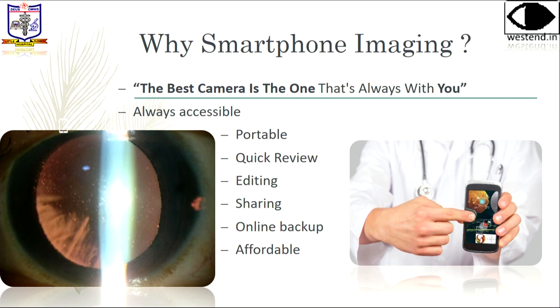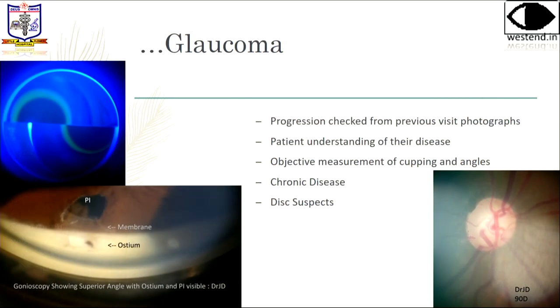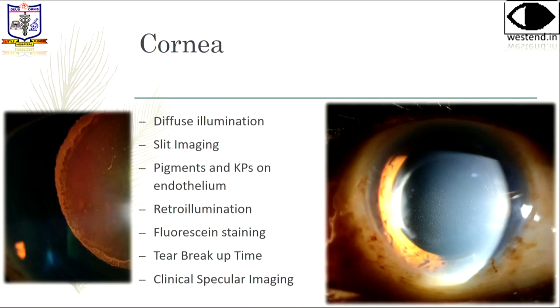You can do all these things on a smartphone which you cannot do on a slit lamp camera. Gonioscopy, optic disc photos — all important in glaucoma. You can check progression from previous photographs, especially in an institute where one doctor sees a patient one day and the next session somebody else sees the same patient. You need photographic evidence; written documentation is not enough.